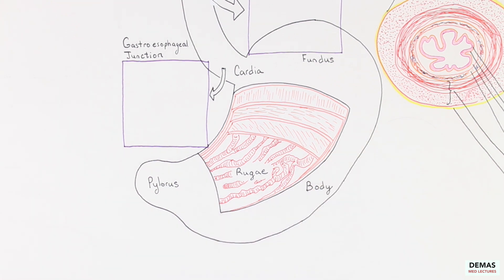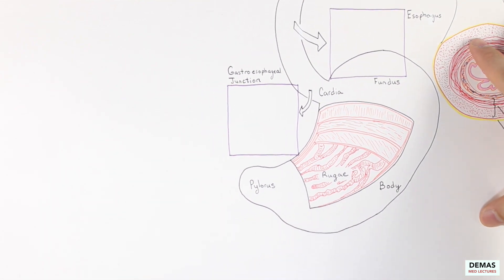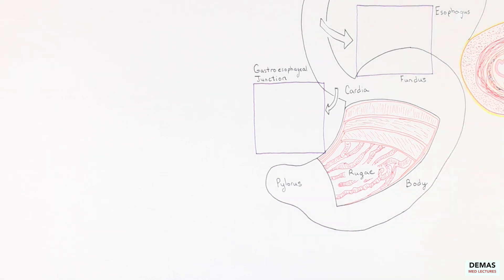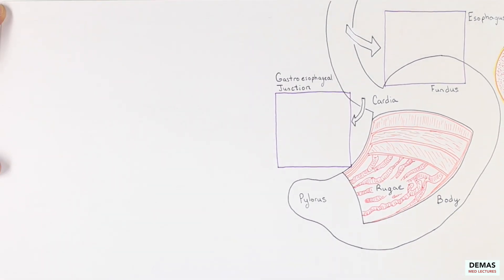I mentioned earlier that one reason that the stomach is separated into different parts is due to the different histological structures. Let's take a closer look at that now.